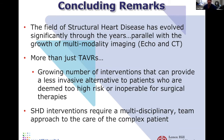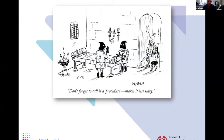To summarize: the field of structural heart disease has evolved significantly through the years, parallel with the growth of multimodality imaging — echo, CT, and MRI. It's more than just TAVR. There are a growing host of interventions that can provide less invasive alternatives for patients deemed too high-risk or not good candidates for surgery. All of our interventions require a multidisciplinary team approach to the care of the complex patient, and this team approach really does change the game for the quality and level of care we're able to provide. Don't forget to call it a procedure — it makes it less scary for patients.